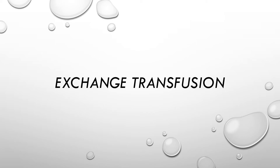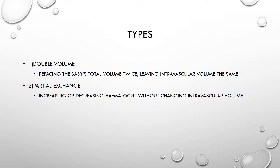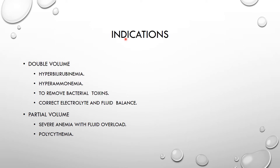Welcome. We're going to be talking about exchange transfusion — the process of withdrawing a patient's blood and replacing it with fresh whole blood. It could be a double volume exchange transfusion, where we replace the patient's total body volume twice while leaving intravascular volume the same, or a partial exchange, where we are increasing or decreasing the patient's hematocrit without changing the intravascular volume.